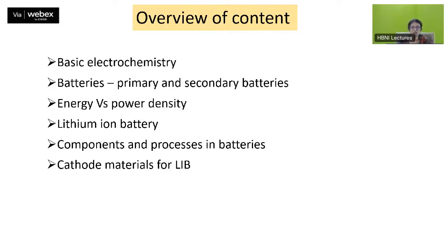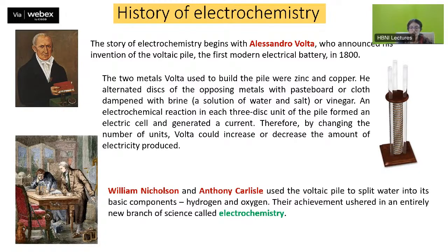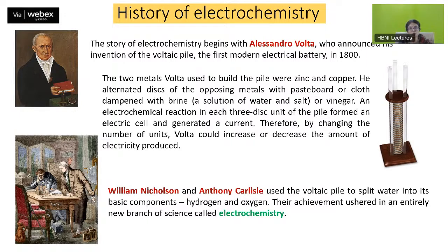Before we start into basic electrochemistry, let's look at a little history. The story of electrochemistry begins with Alessandro Volta, who announced the invention of the voltaic pile — the first modern electrical battery — way back in 1800. The voltaic pile used two metals, zinc and copper, as alternating discs separated by a paste board or cloth dampened with a solution of salt and water, brine, or vinegar. The electrochemical reaction in each unit of the pile formed an electric cell and generated a current. By changing the number of units, Volta could increase or decrease the amount of electricity produced.